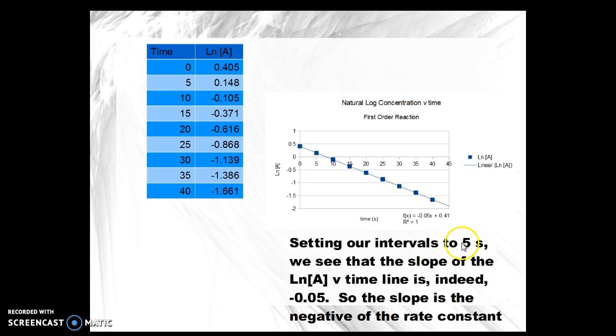If we set our intervals to 5 seconds, we see that the slope of the natural log versus time line is indeed 0.05. That's shown here in the Excel output. So, the slope is the negative of negative 0.05 or positive 0.05, and that's the rate law that we set. You can see that here with a perfect correspondence of the points to the straight line.